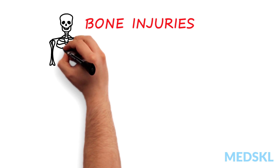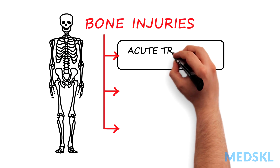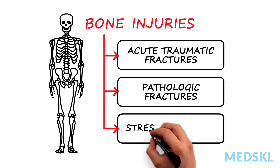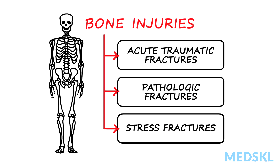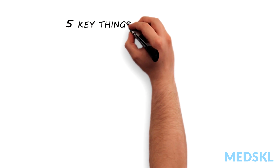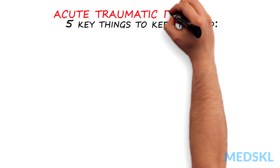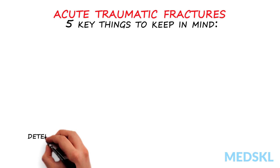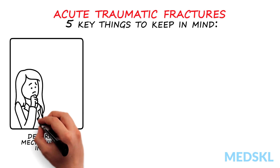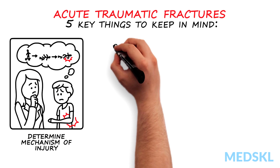Bone injuries fall into three categories: acute traumatic fractures, pathologic fractures, and stress fractures. Keep in mind these five things when seeing a patient with an acute traumatic fracture. First, determine the mechanism of injury, as high-energy injuries require a complete trauma workup.